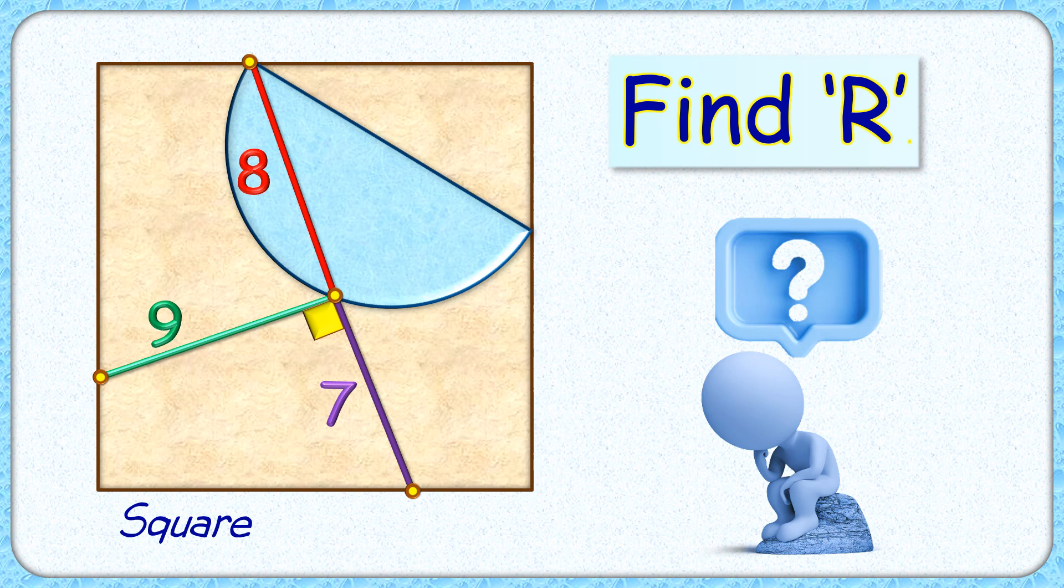Welcome everyone. This interesting question shows a semicircle inside a square, with line segments of length 7, 8, and 9 centimeters. The exciting part is that with this limited data, we have to find the radius of the semicircle.